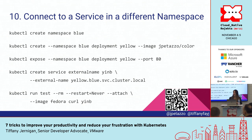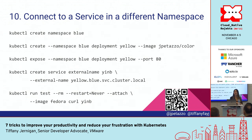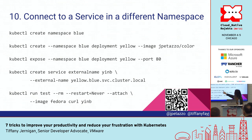Did you know you can connect to a service within a different namespace without having a load balancer or anything like that? You can use ExternalName — say yellow is the service you're exposing in one namespace, and blue is the namespace, and then you give it .svc.cluster.local. Then you can just use that service ExternalName. I don't think I can actually have this working on the cluster I currently have set up, but this is a thing — you can try it later from the slides.